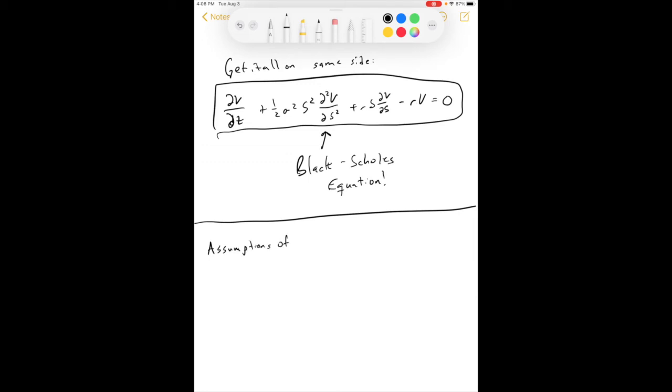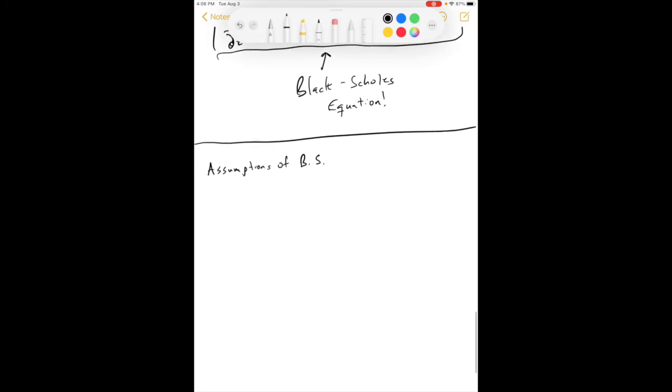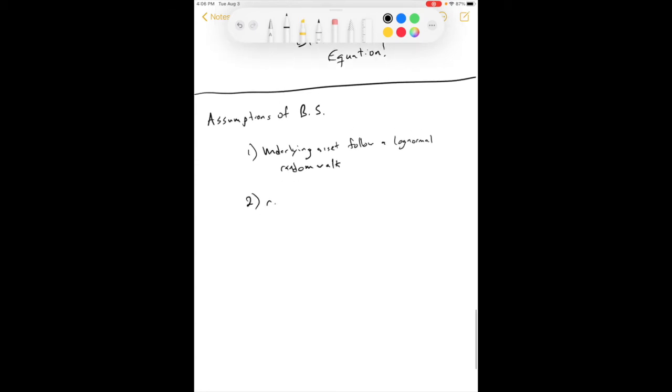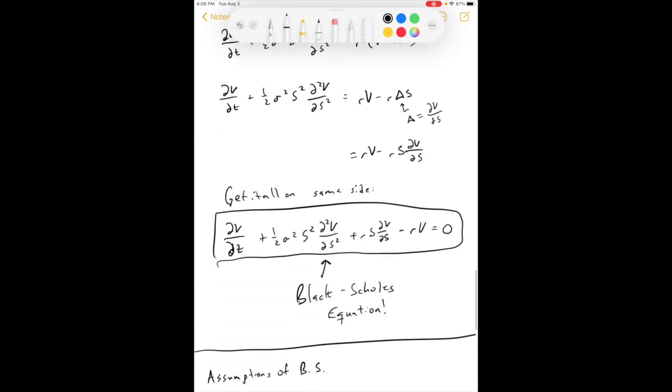The assumptions of Black-Scholes. So, number one, we've already talked about it. We used it in the derivation. Okay? The underlying asset follows a log-normal random walk. Number two, the risk-free rate is known. Okay? We used that when using the no arbitrage principle.